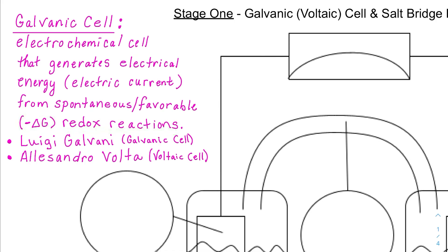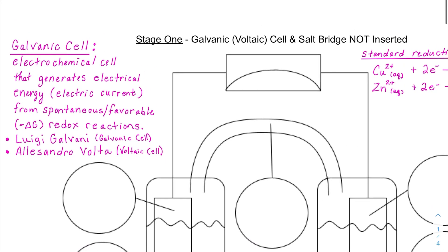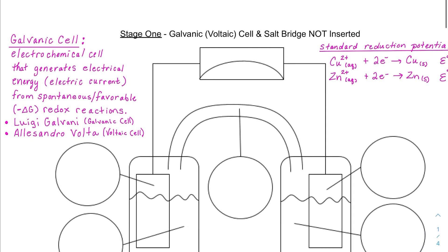Reduction-oxidation reactions are called redox reactions, and they involve electrons being exchanged between the particles. Thanks to Luigi Galvani and Alessandro Volta, we have galvanic cells, and they are the basis of all batteries.